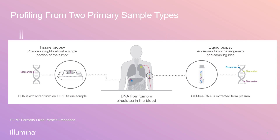We next need to understand what sample types are capable of being processed in current comprehensive genomic profiling assays. There are typically two main sample types, which include solid tumors or liquid biopsies. A solid tumor may be from fresh or frozen tissue, but more often is in the form of formalin-fixed paraffin-embedded samples, more commonly known as FFPE.